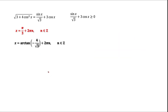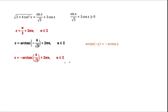The last thing is to simplify arctan(−4/√3). We can use the fact that arctangent is an odd function, meaning arctan(−y) = −arctan(y), so the minus sign can be pulled out. Doing that gives us the final answer. So altogether we have two sets of solutions: x = π/3 + 2πm and x = −arctan(4/√3) + 2πn, which satisfy this trigonometric equation.